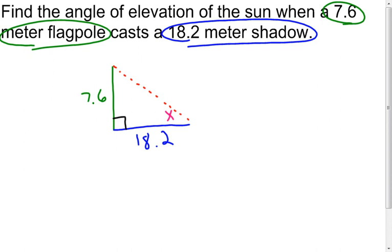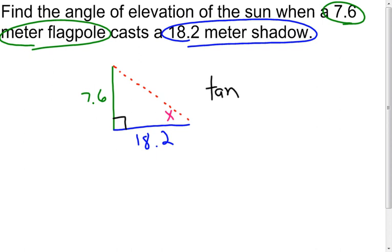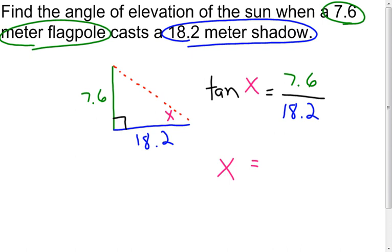From my angle x, I know the opposite side and the adjacent side, which tells me I'm going to use tangent. The tangent of x equals the opposite side, 7.6, over the adjacent side, 18.2. Now remember, we're looking for the measure of an angle, so we're going to take the inverse tangent of both sides. That gives me the inverse tangent of 7.6 over 18.2.